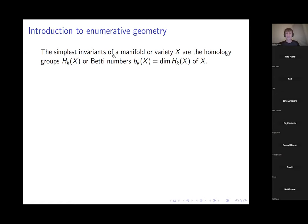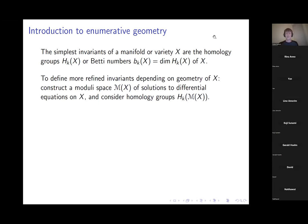As I'm sure you all know, the simplest algebraic invariants one associates to a manifold or a variety are the homology groups or their dimensions — the so-called Betti numbers of the space. These are a fairly coarse invariant; they just depend on the underlying topological space.